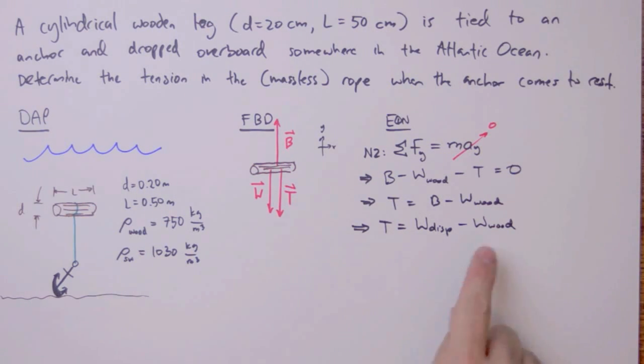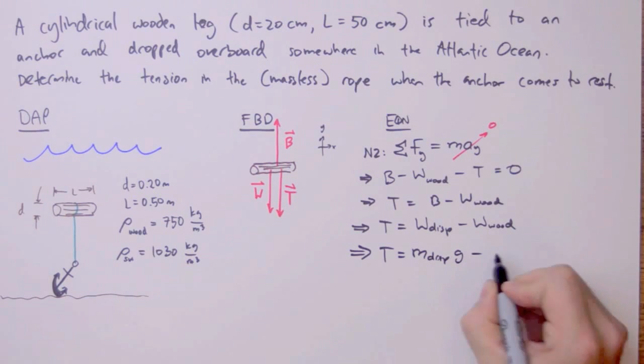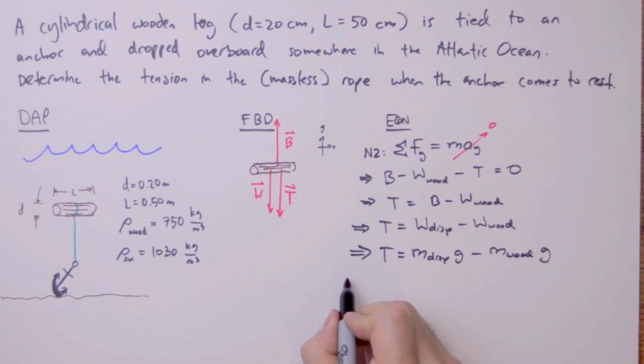And now I need an expression for both of those weights. Tension force is equal to the mass of the displaced fluid times the acceleration due to gravity. And this is going to be the mass of the wood times the acceleration due to gravity. I'm going to factor out g for both sides.